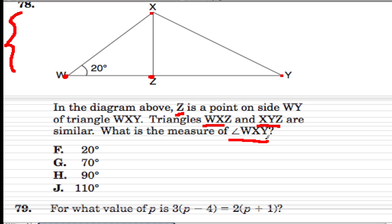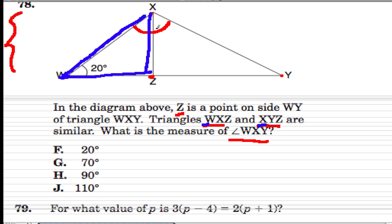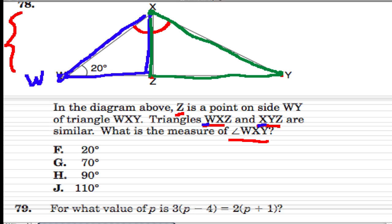They want to know the measure of angle WXY — that's that big angle right here. Now let's go back for a moment and find our corresponding angles. Notice how they list w and x first — that means this point w on the small triangle corresponds to point x in the other triangle. So they're showing you how the triangle was turned. It might visually seem like w should correspond to y, but no — w corresponds to x up here, and then we follow the order from there. So x and y means point x on the blue triangle matches point y on the green triangle, and point z matches point z on both triangles.